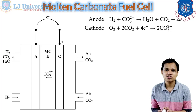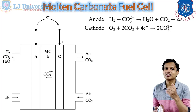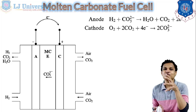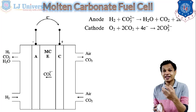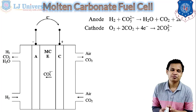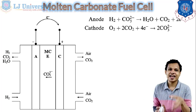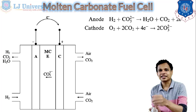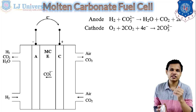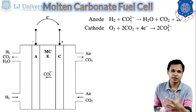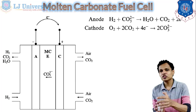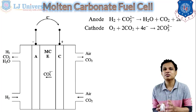A big disadvantage of the molten carbonate fuel cell is the operating temperature range of 600 to 700 degrees Celsius, which is very high and not feasible for an electric vehicle. The only advantage is that the electrocatalysts used are not noble metals — they are not platinum. But because of the higher temperature, this type of fuel cell is not feasible for our vehicle.